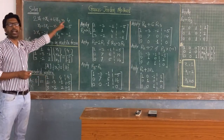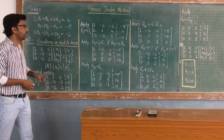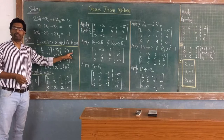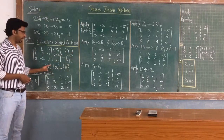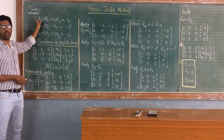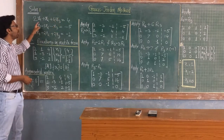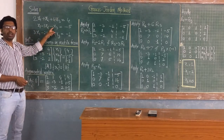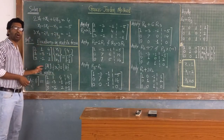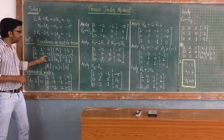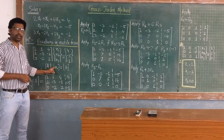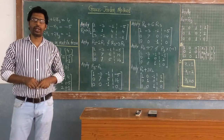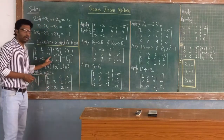The problem is: solve the given set of equations using Gauss-Jordan method. The first step is similar to Gauss elimination method — write down the given set of algebraic equations in matrix form, that is AX = B. Matrix A stands for the coefficients matrix, that is the coefficients of X1, X2, X3. The coefficient matrix is [2, 1, 4; 1, -3, -1; 3, -2, 2]. Vector X contains the unknowns X1, X2, X3, and vector B contains the right-hand side constants.